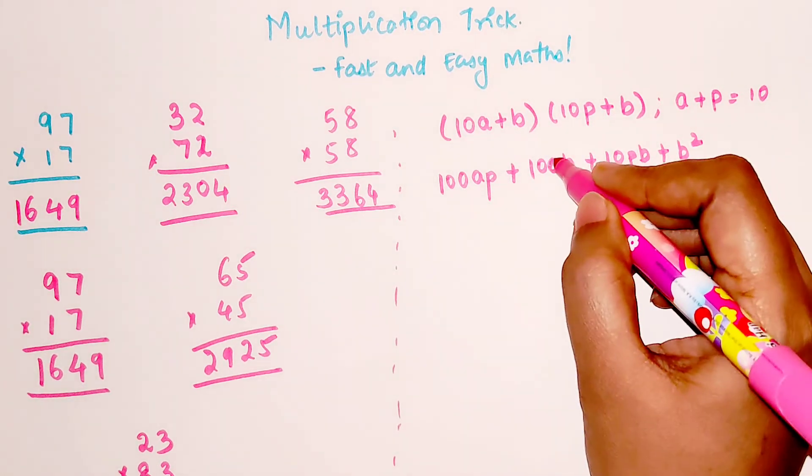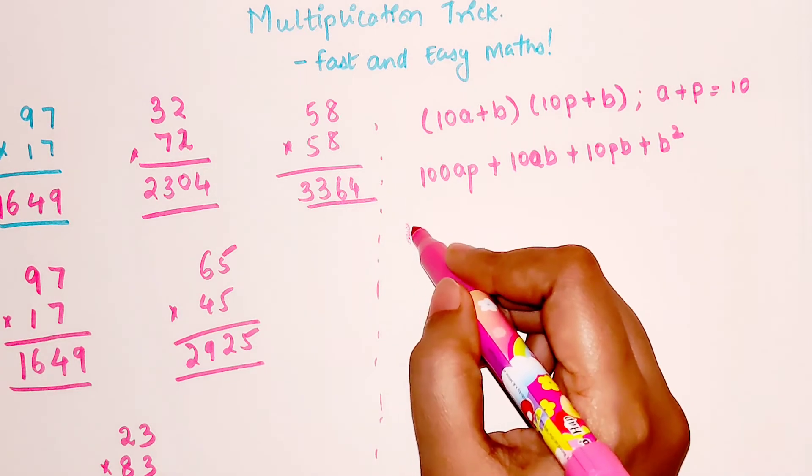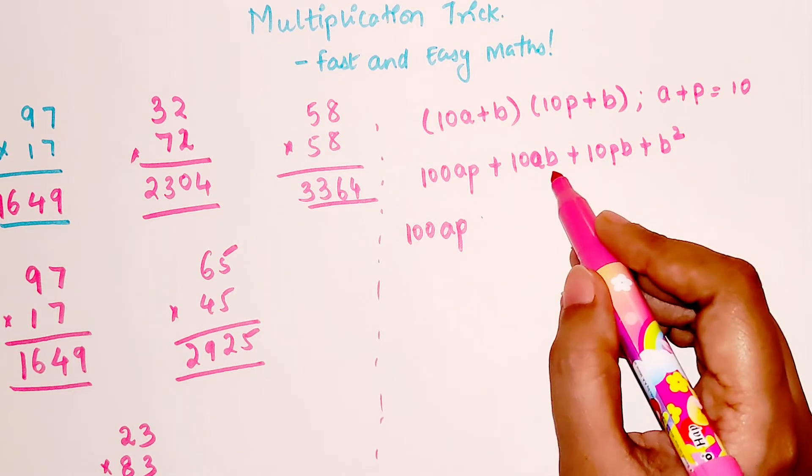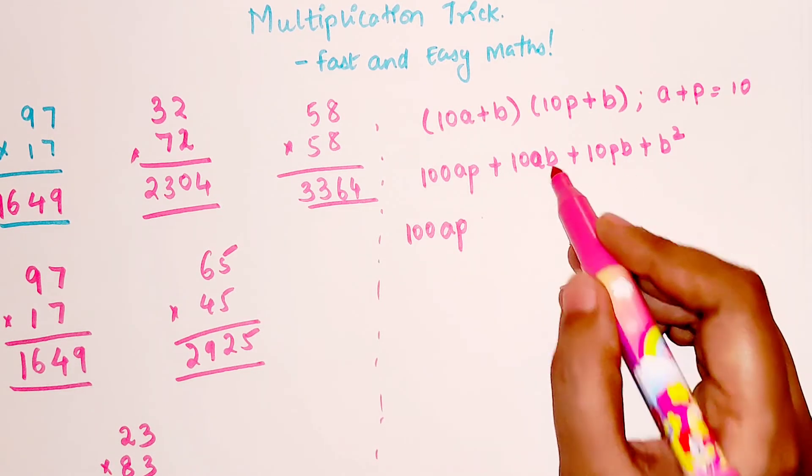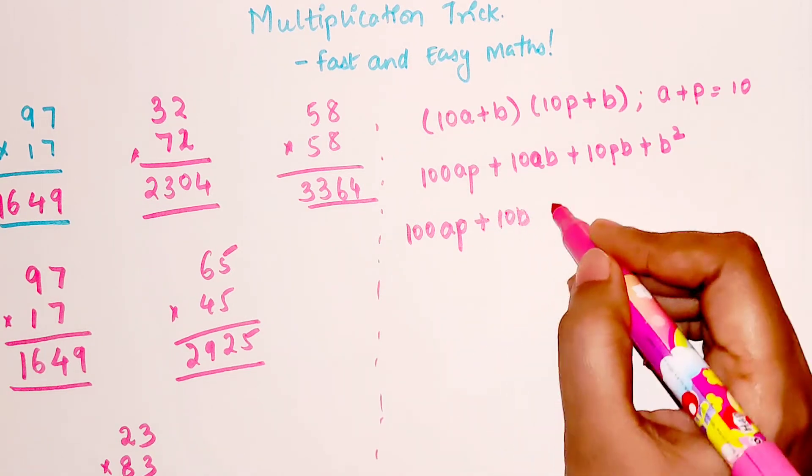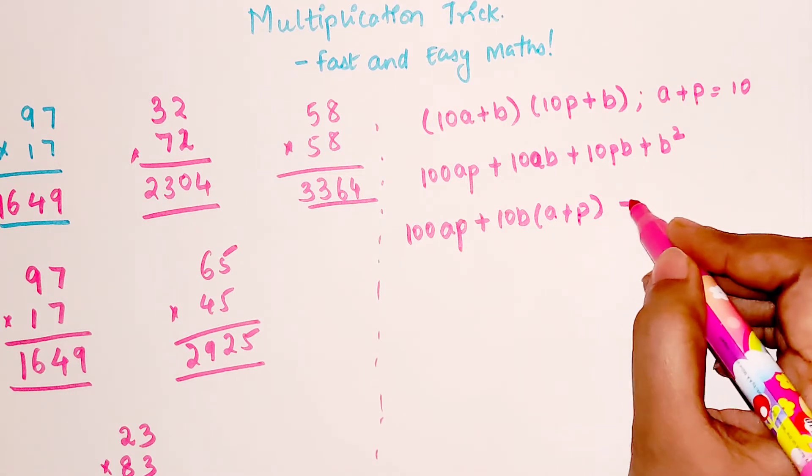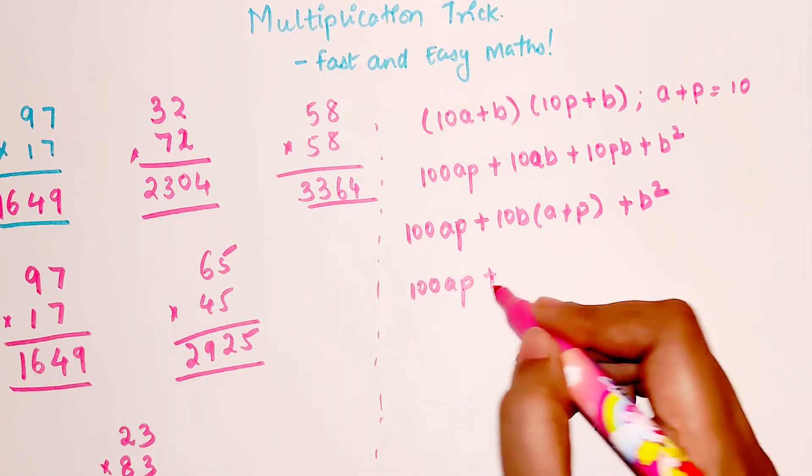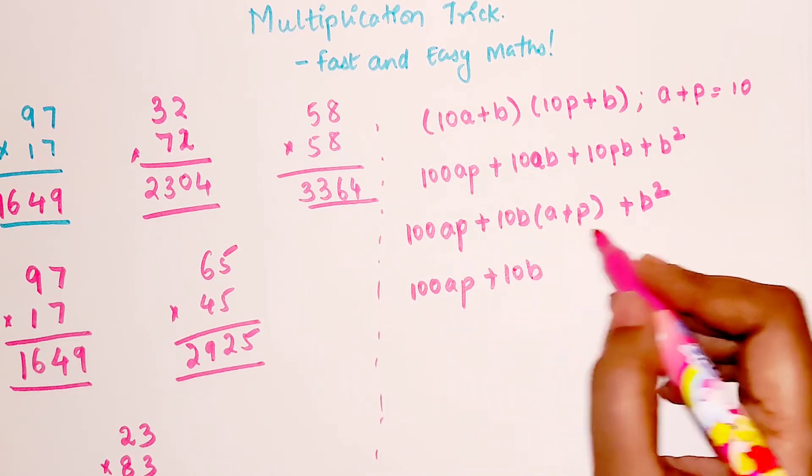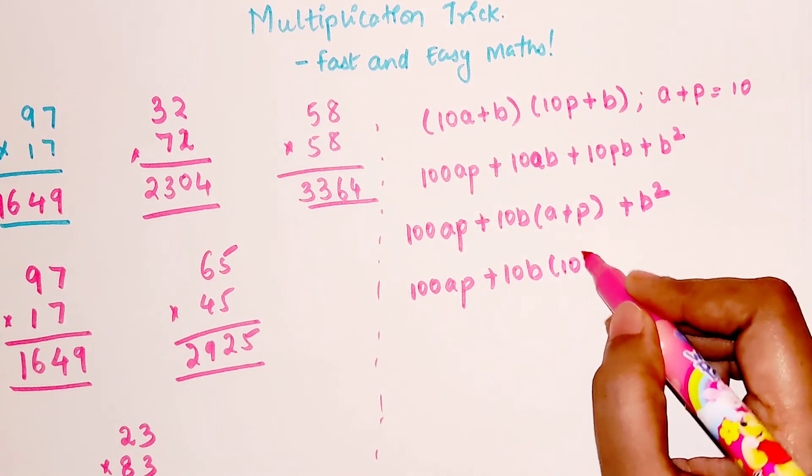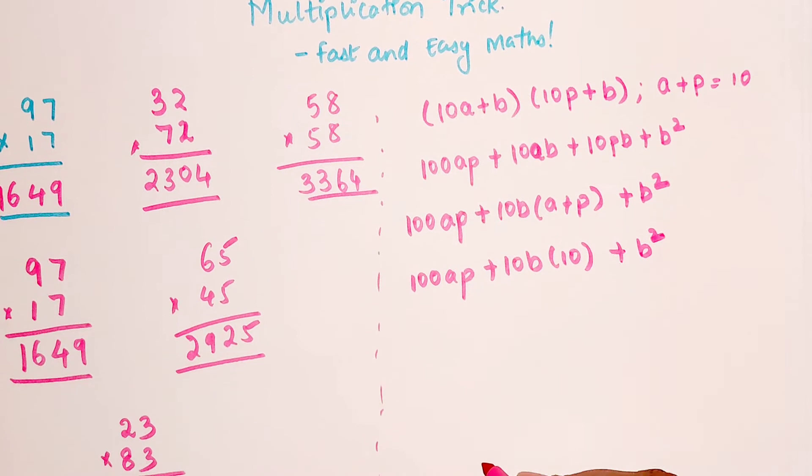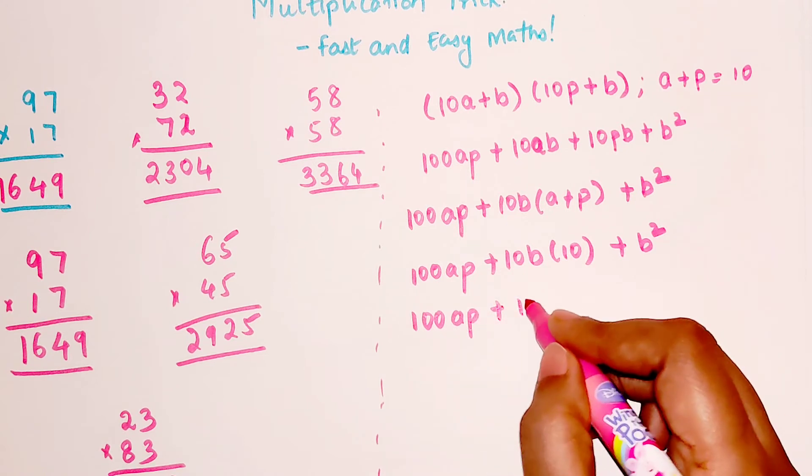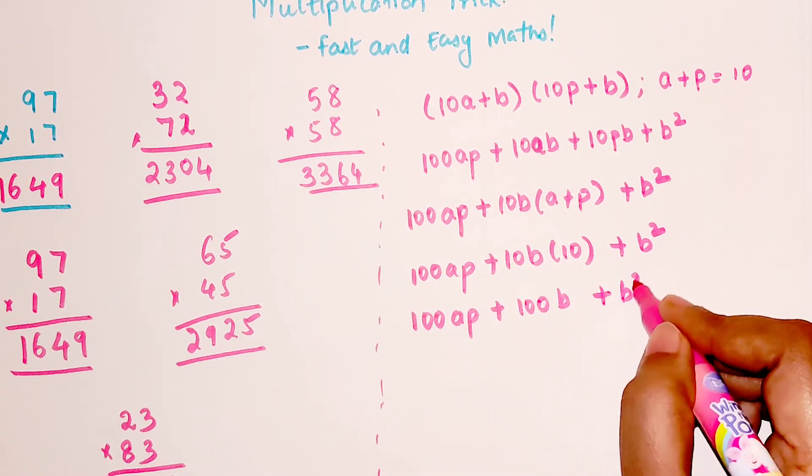So this is 100ap. Here if you look closely I can take 10 and b common, so let's do that. 10b, I'm left with a plus p, plus b squared. So this is 100ap plus 10b. Instead of a plus p I can write down it is nothing but 10 itself, plus b squared. So now I'm getting 100ap plus 100b plus b squared.